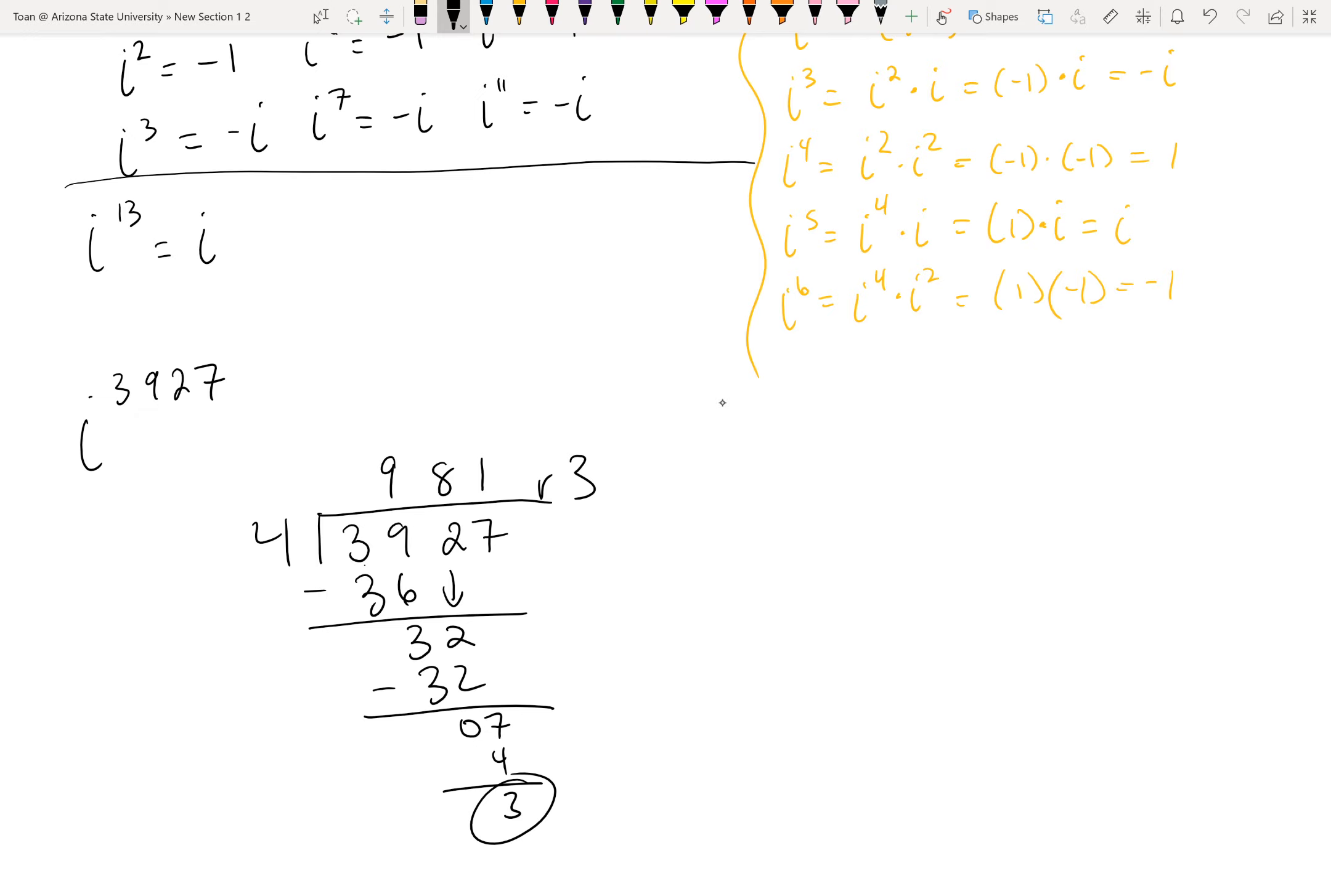So what does this work say? This says in 3,927 exponents of I, they repeat themselves 981 times. Which means all of those repeats, all of those duplicates we can throw away. All I really care about are the unique leftovers, which is in this case a remainder of three. So all of this work says I to the 3,927 is the same thing as I cubed. And we should know from the list that I cubed is negative I. That is the answer here. So that's how you evaluate powers of I.